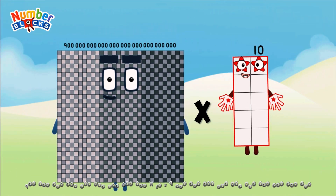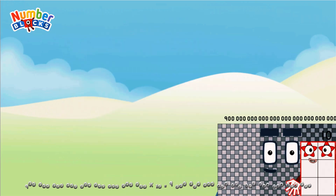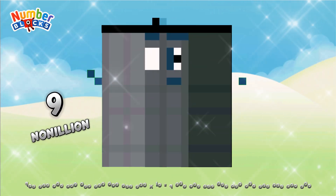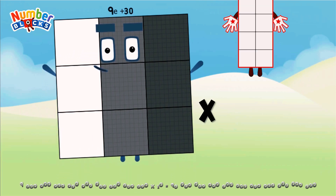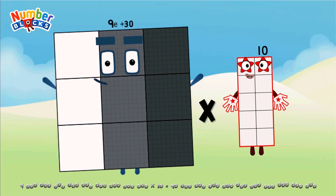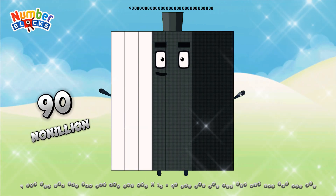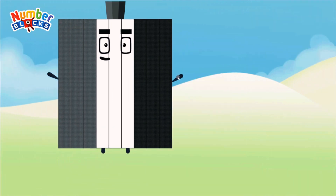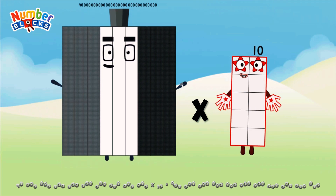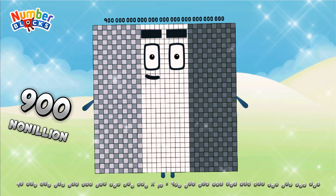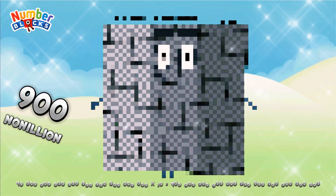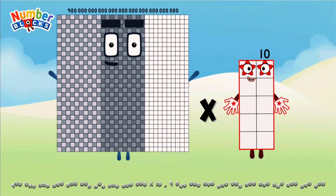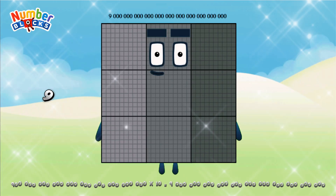900 octillion multiplied by 10 equals 9 nonillion. 9 nonillion multiplied by 10 equals 90 nonillion. 90 nonillion multiplied by 10 equals 900 nonillion. 900 nonillion multiplied by 10 equals 9 decillion.